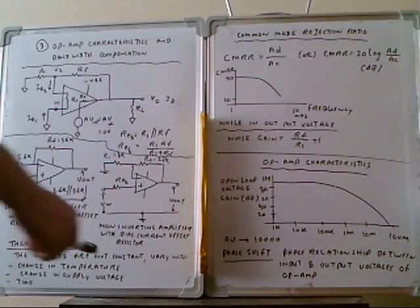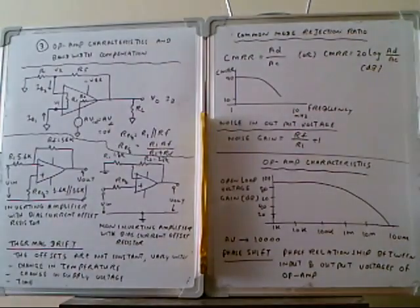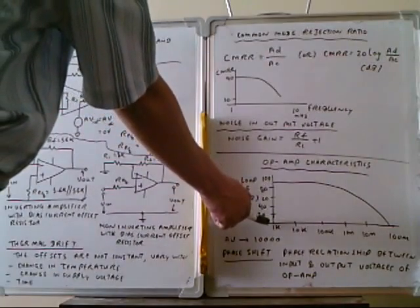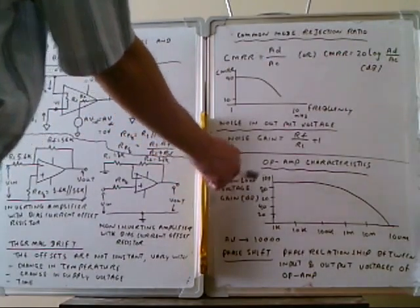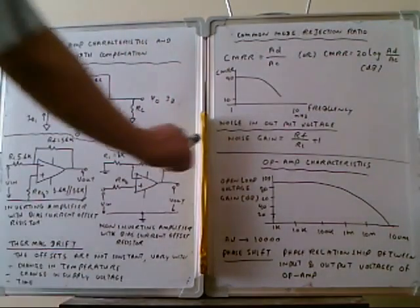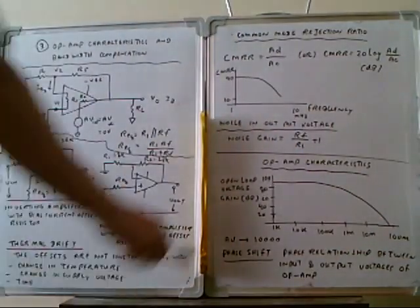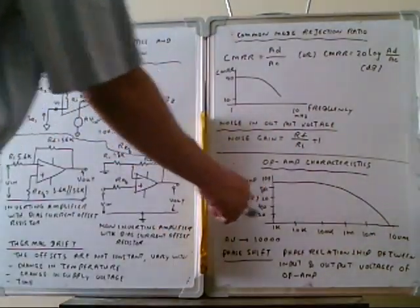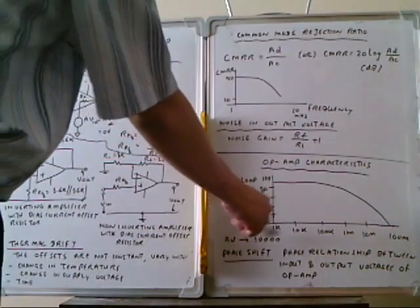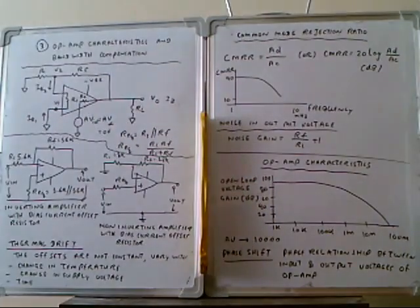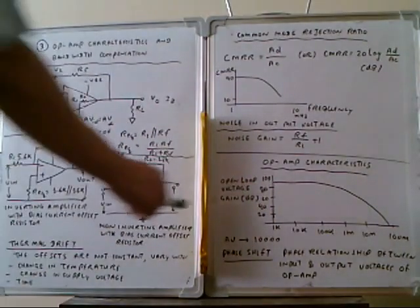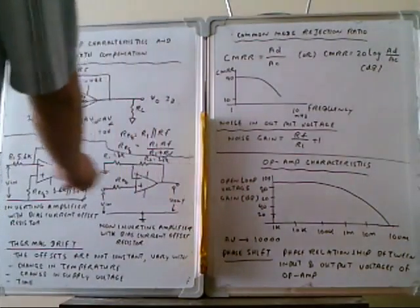This is the general frequency response characteristic of the operational amplifier, starting from 1 kilohertz up to 100 megahertz. The gain ranges from 20 to 100. We can draw the frequency response characteristic curve, and from this we can achieve the voltage gain up to 10 on the Bode plot.